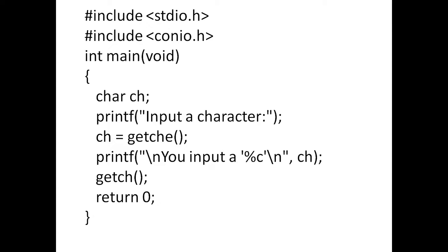If you execute this program, it will ask 'input a character'. If you press any key from the keyboard, automatically it will echo on the screen with the help of getche. That is about getche and getch — getch will wait for any input from the keyboard, and when you press enter, it will come back to program mode. I hope you understood well. If you like this video, share it and subscribe. Thank you very much.